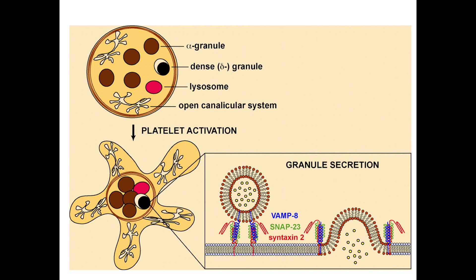Platelets play a very essential part in the coagulation process. You will hear about adhesion, aggregation, and secretion. Within the platelets you have different types of granules, which are essentially vesicles — alpha granules and dense granules. Dense granules contain serotonin, histamine, ADP, and calcium. Alpha granules contain other substances such as platelet factor IV and others; you will find the full list in this slide.